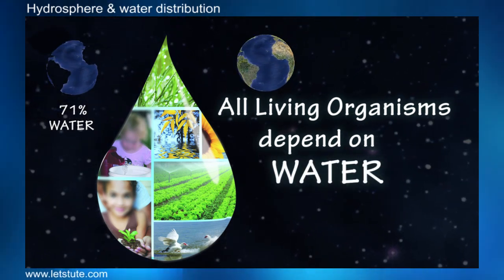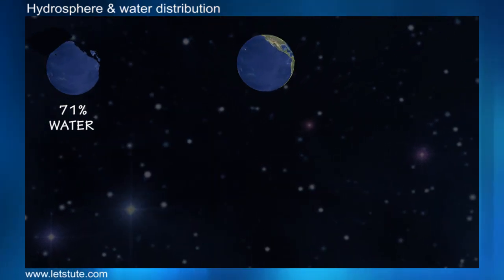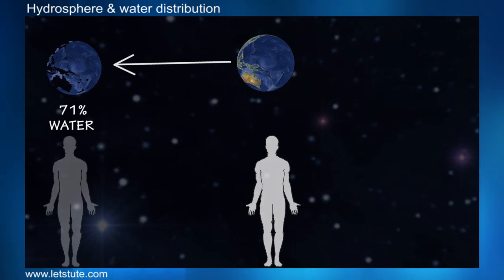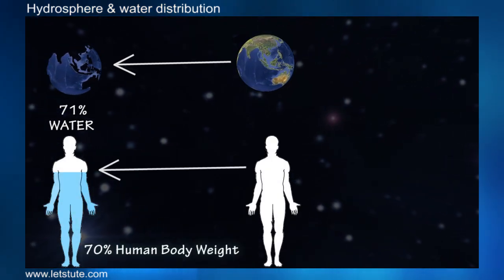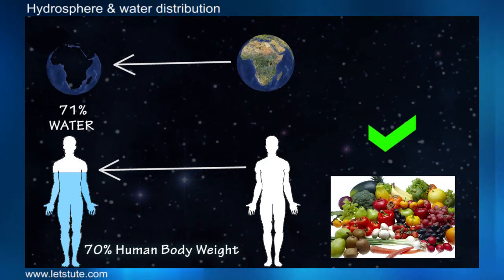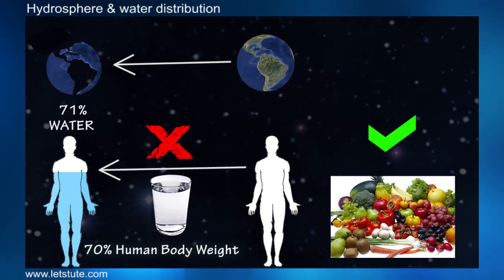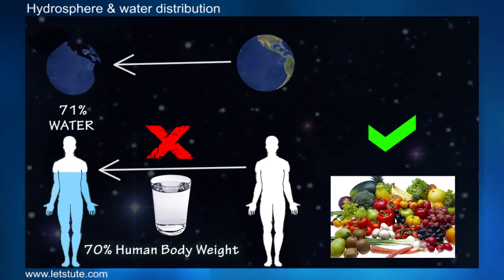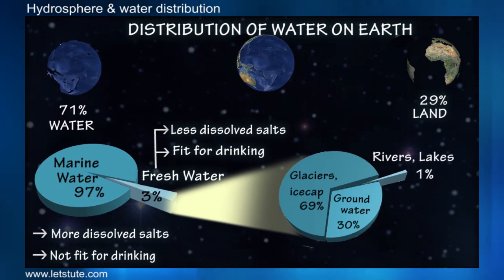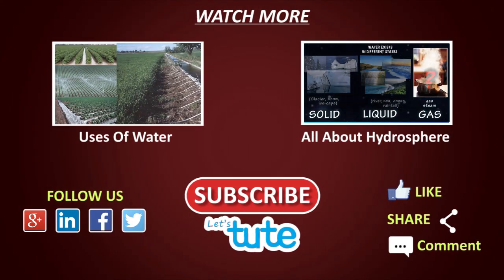Where there is water, there is life. It is not just the Earth that is majorly covered with water — water makes up approximately 70% of a human's body weight. An average person could live without food for nearly a month, but it would be difficult to survive even for a week without water. That's how important water is to human life.